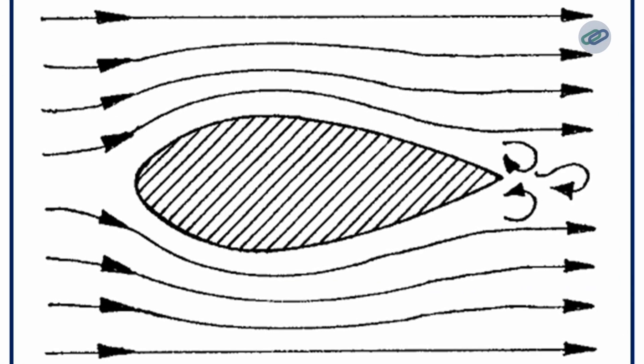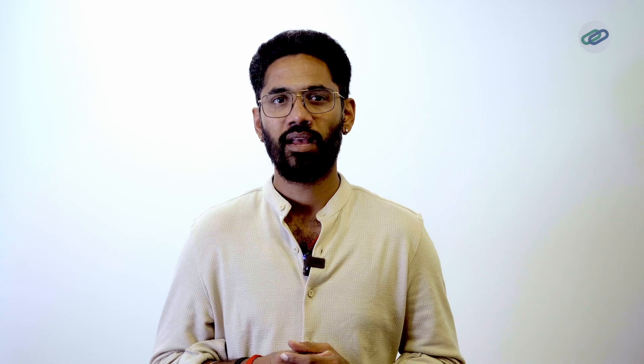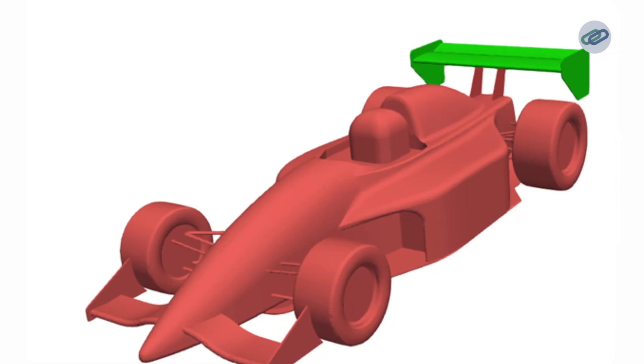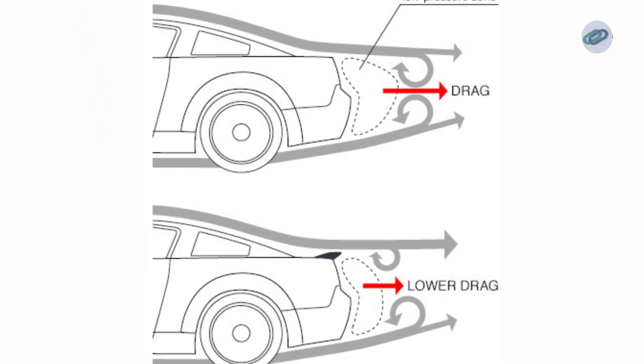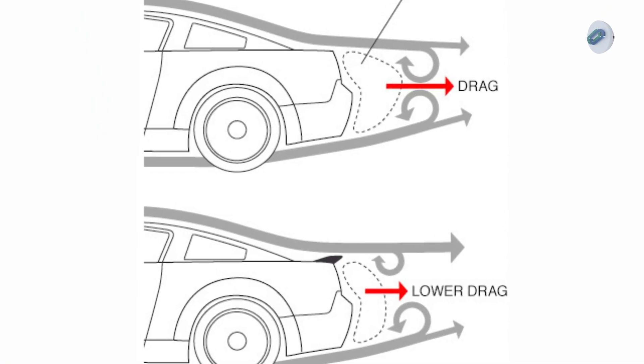A simple representation can be seen here. This is precisely why race cars make use of spoilers. The spoiler — or wing — delays the separation point and moves it away from the vehicle.